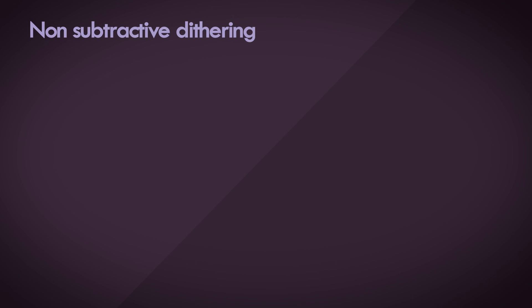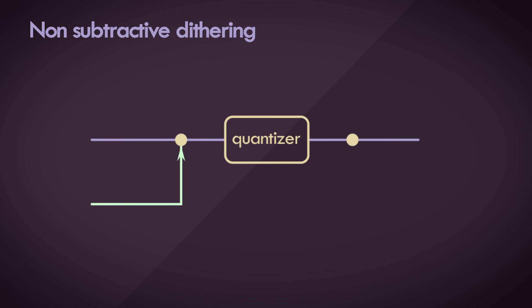Everything we've looked at so far falls under the category of non-subtractive dithering, which means we add the dither signal to our input signal before quantization, and that's it.